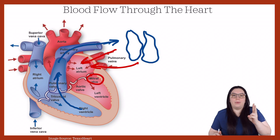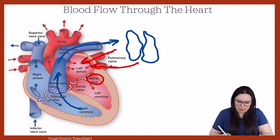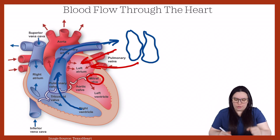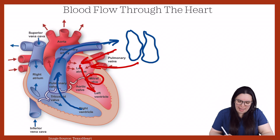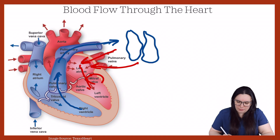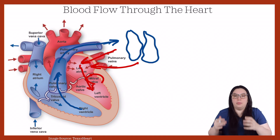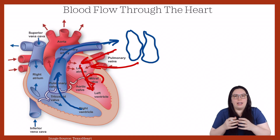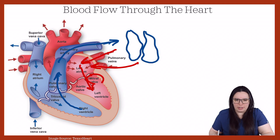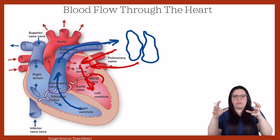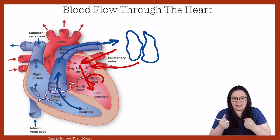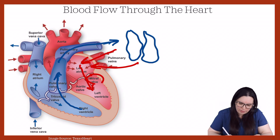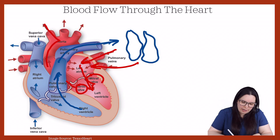The mitral valve — 'bi,' meaning two leaflets — is on the left side of the heart; the tricuspid, 'tri,' meaning three, is on the right side. When our atria contract, it pushes blood down into our left ventricle. That's the last stop in the heart where this oxygenated blood is going to get pumped out — through the aortic valve to our aorta during systole when the ventricles contract.